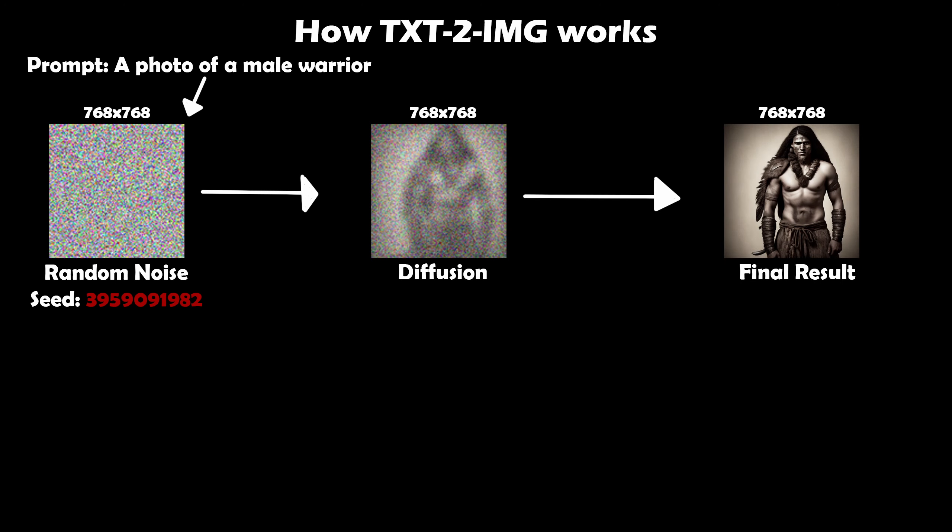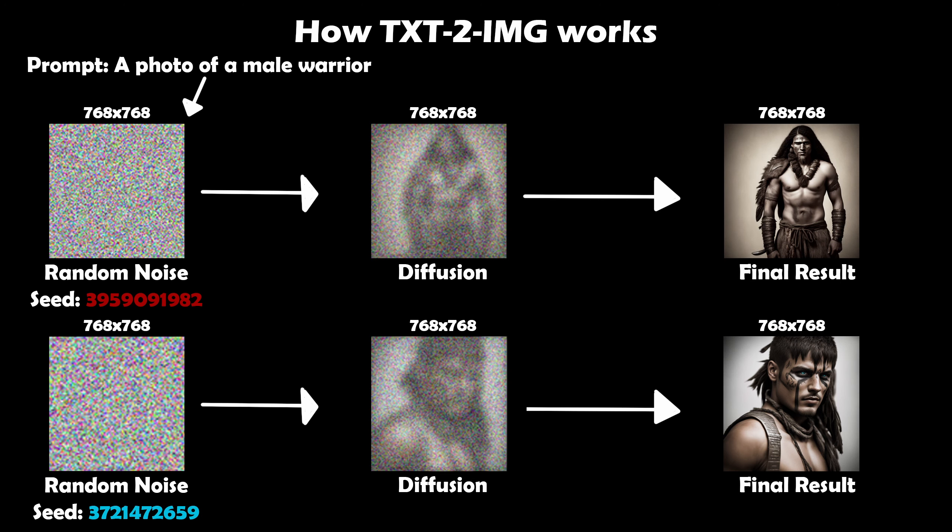Let's see how text-to-image works. Let's first enter a prompt — 'a photo of a male warrior' — and press generate. What will happen is the AI is going to create an image redefined by our resolution, it's going to set a random noise on top of that image, and it's going to lock it into a random seed. Then the AI is going to go through the diffusion process and produce our final image. If we press generate again, the whole same process will happen all over again.